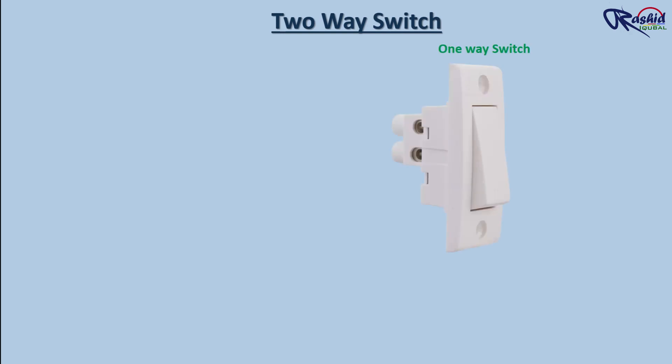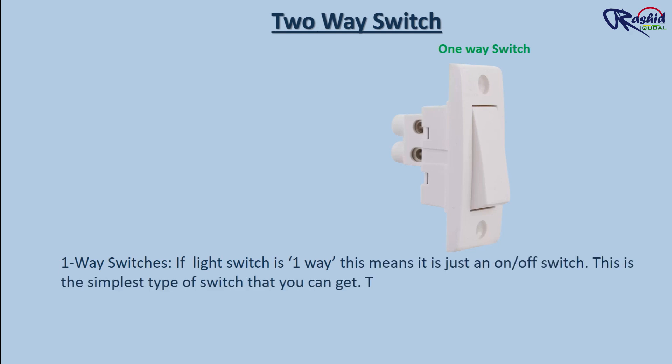One-way switches. If a light switch is one-way, this means it is just an on-off switch. This is the simplest type of switch that you can get. The single switch controls a single light.